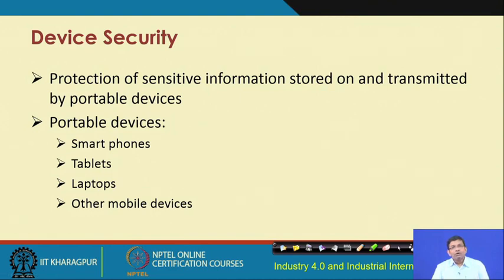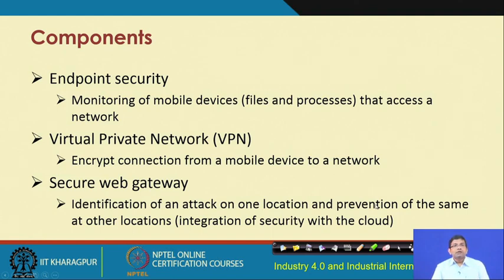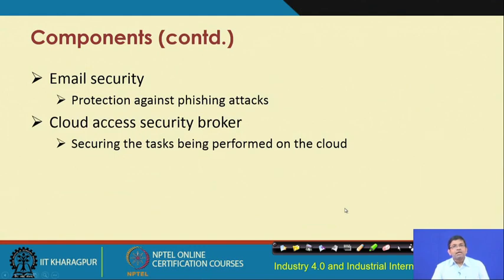Network segmentation — dividing the network into smaller parts and enforcing security policies explicitly in those subdivided parts — is also important. VPN security, security information and event management are other network security concerns. Device security is very important for protecting sensitive information stored in devices such as smartphones, tablets, and laptops. Endpoint security, VPN security, and gateway security are key components. Cloud security is also important because cloud is typically a third-party service, and securing the integration and communication between the home system and the cloud is essential.